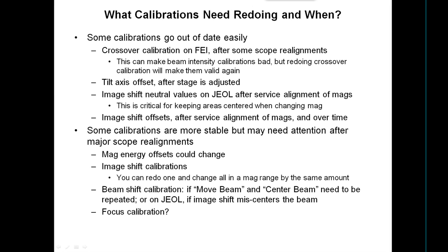The tilt axis offset, if you enter it in the property file, goes out of date every time the stage gets touched by service — or probably does. If service is good, they'll adjust it to within one micron and it won't matter. But the fact is they often don't, and unless you insist on them adjusting it when it drifts, you'll end up with a random different value at various times.